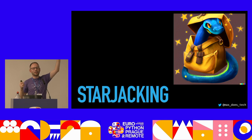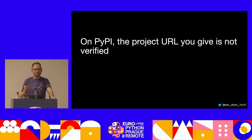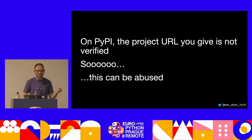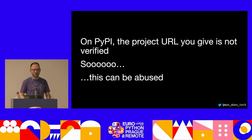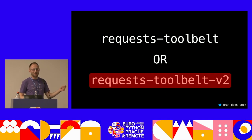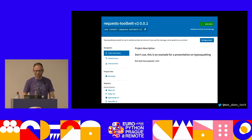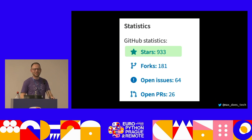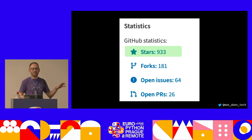Has anyone heard of starjacking? On PyPI, the URL you give for your project in your setup.py or pyproject.toml is not verified, and that means it can be abused. You can upload a package and pass in the URL of any GitHub repository whatsoever, and it will give you that number of stars. I uploaded a package last night — definitely not Vonage — and it has 900 stars. I made this last night. This is a real example of starjacking, used to make a fake page look legitimate.